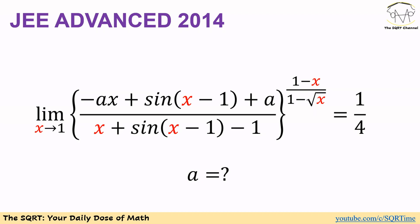In this problem we are facing a little scary equation. We have a limit of a fraction: the numerator is negative a times x plus sine of (x minus 1) plus a, and the denominator is x plus sine of (x minus 1) minus 1. We need to take this fraction to the power of (1 minus x) over (1 minus square root of x), then find the limit of the whole expression as x approaches 1.